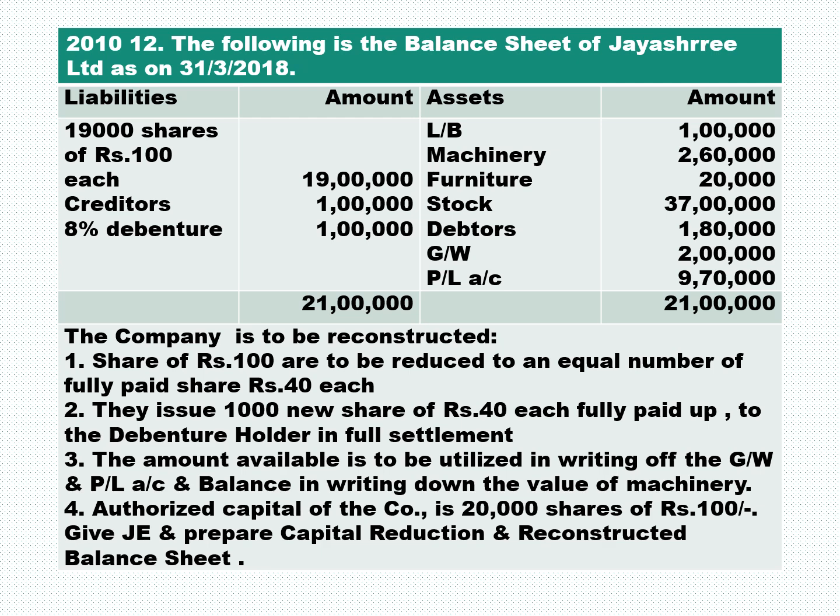The company is to be reconstructed. Shares of rupees 100 each are to be reduced to an equal number of fully paid shares of rupees 40 each. They issue 1,000 new shares of rupees 40 each fully paid to the debenture holders in full settlement. The amount available is to be utilized in writing off goodwill and P&L account, and the balance is written down in the value of machinery. Authorized capital of the company is 20,000 shares of rupees 100 each. Give journal entry and prepare capital reduction account and reconstructed balance sheet.